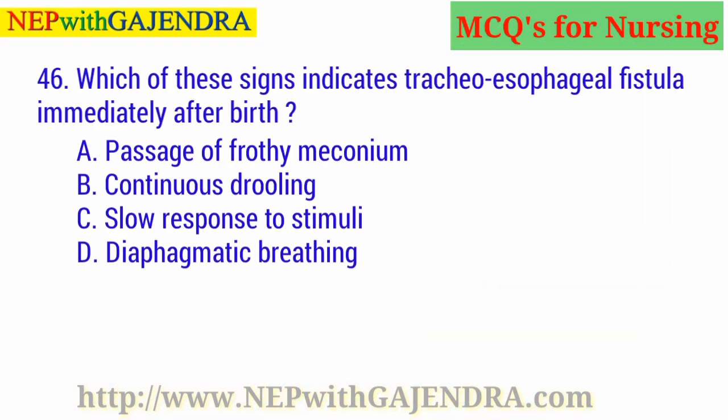Which of these signs indicates tracheoesophageal fistula immediately after birth? A. Passage of frothy meconium. B. Continuous drooling. C. Slow response to stimuli. D. Diaphragmatic breathing. The right answer is B: Continuous drooling.